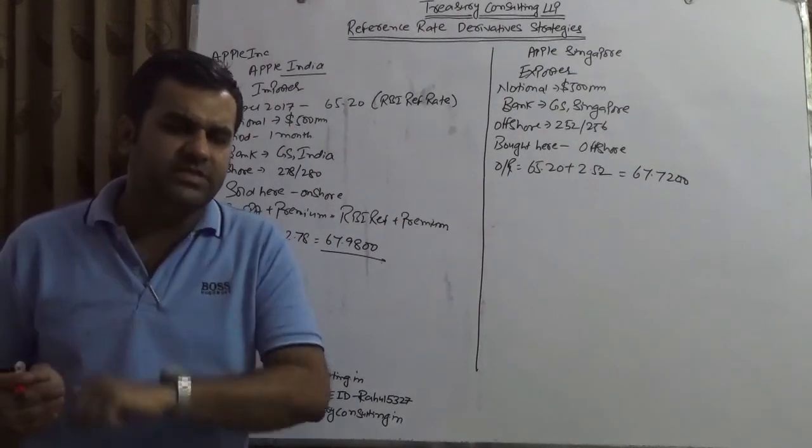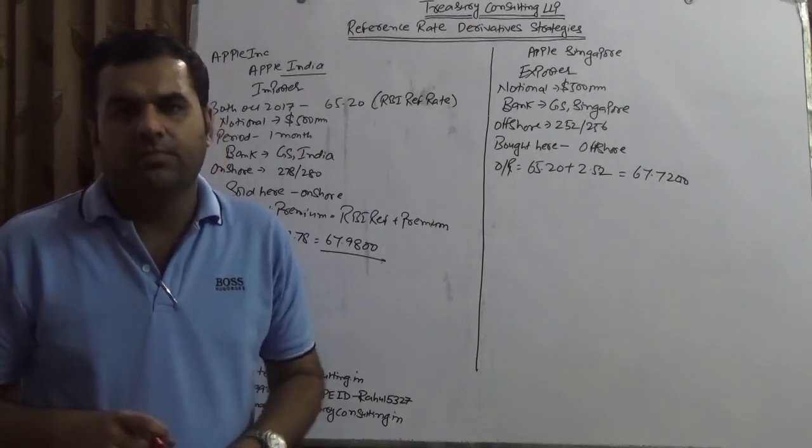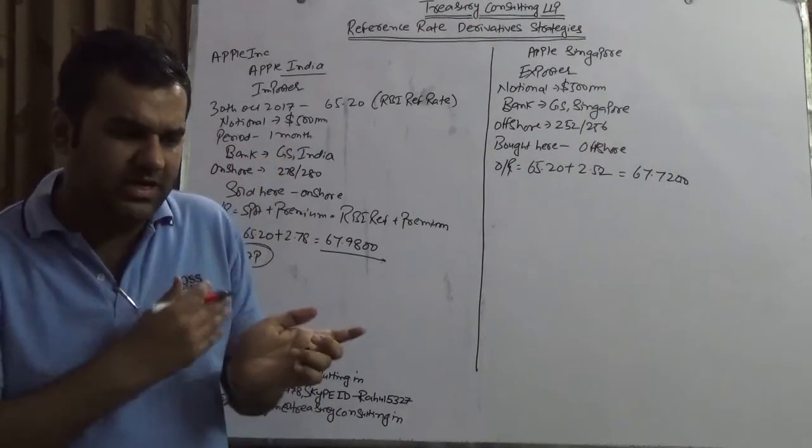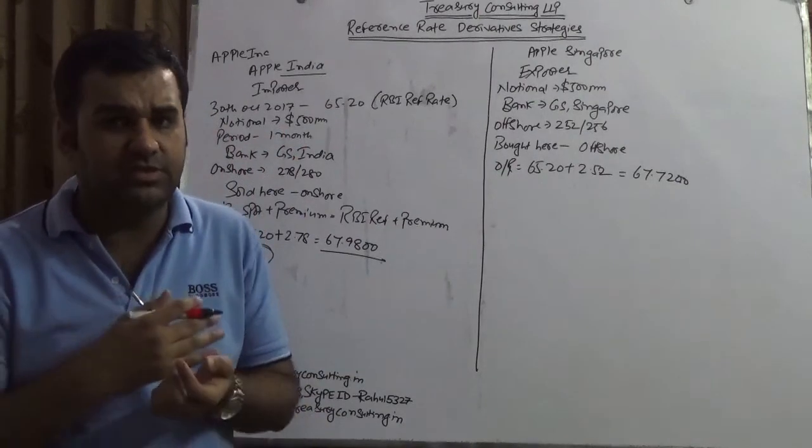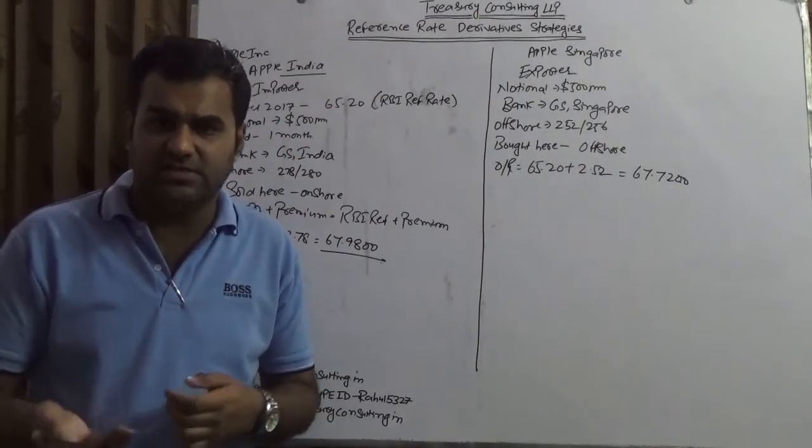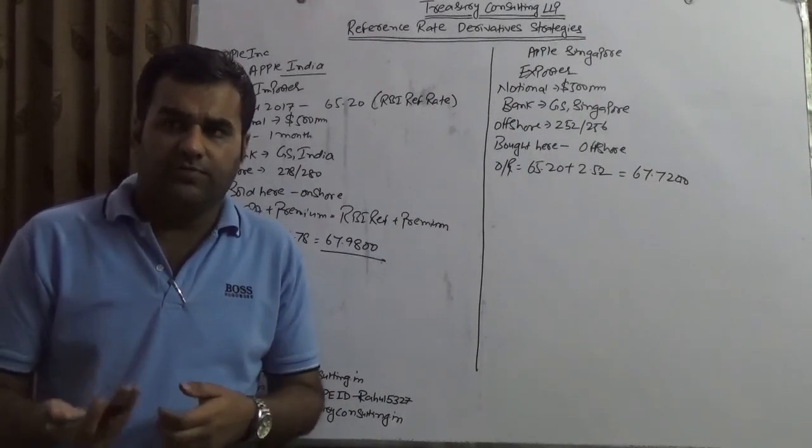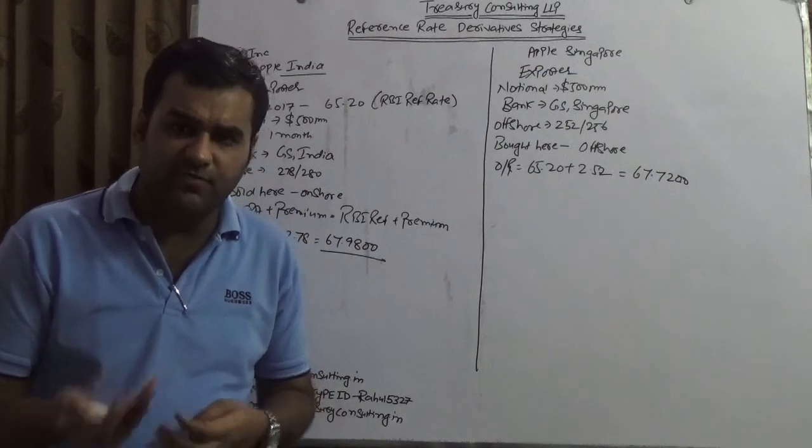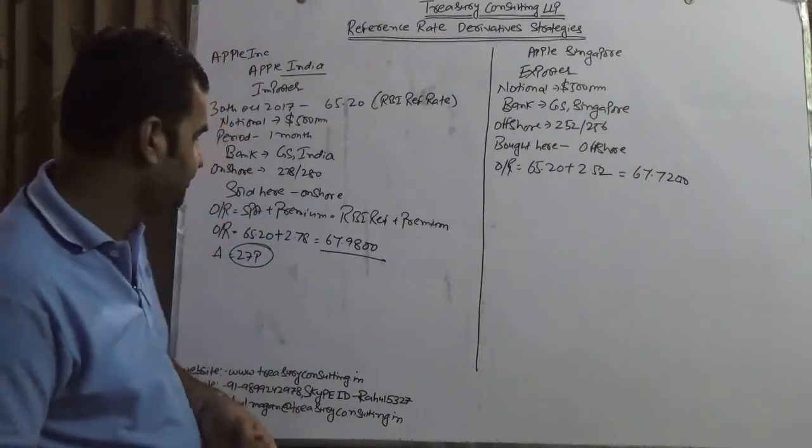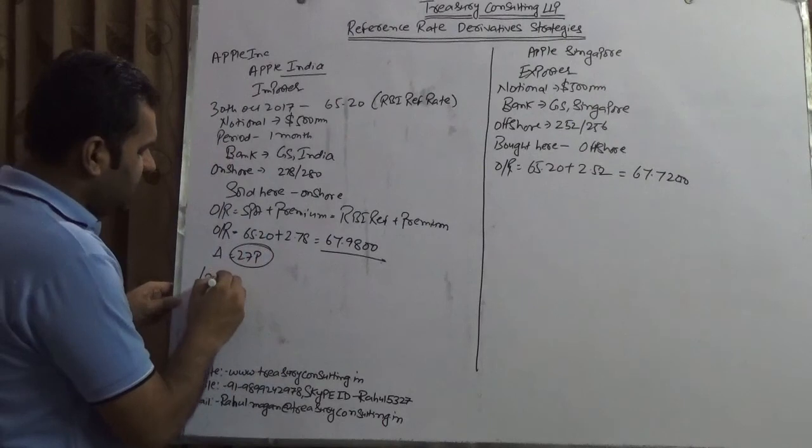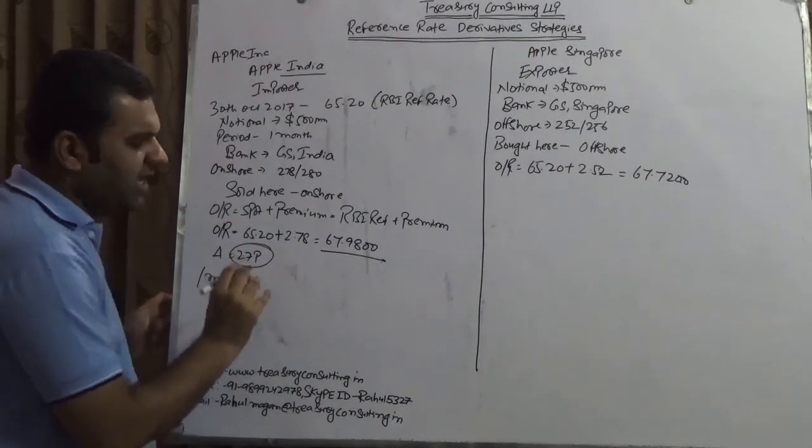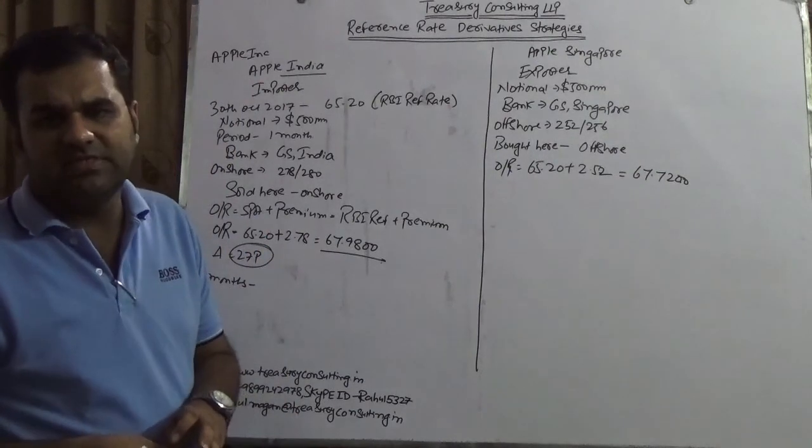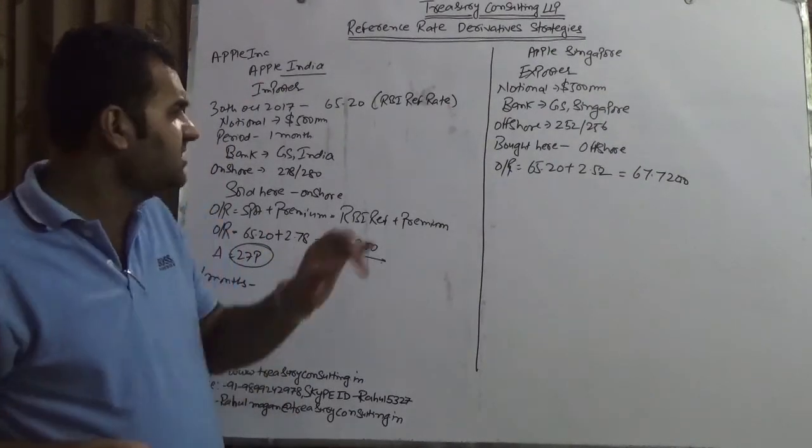After one month, because the actual contract they wanted to take for one year, they should not take for one year due to revaluation reasons. If you take for one year then the contract will mature after one year but 12 times the valuation would have happened and this would eat away your profits. After one month, you take any RBI reference rate.